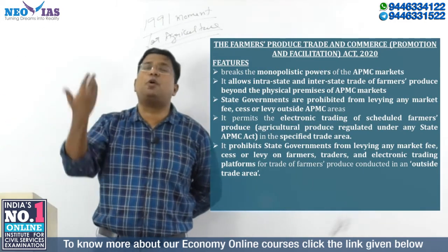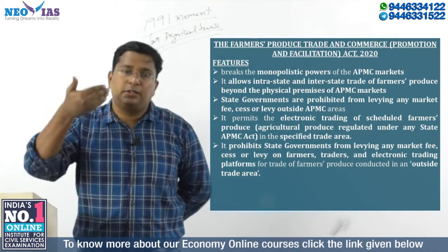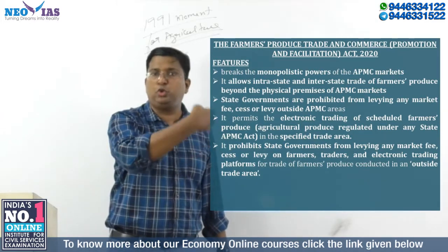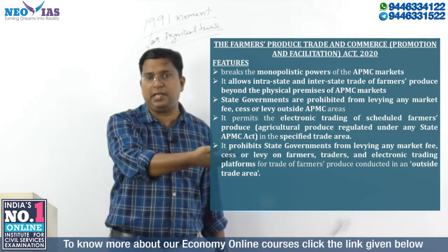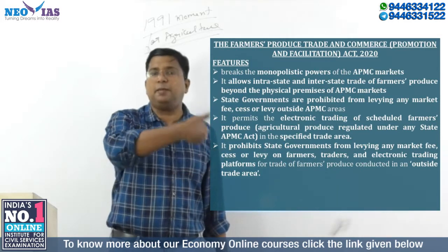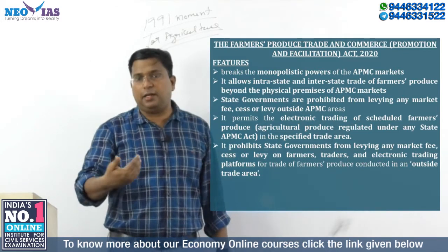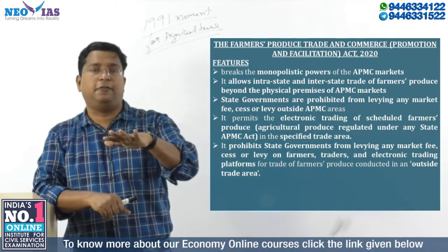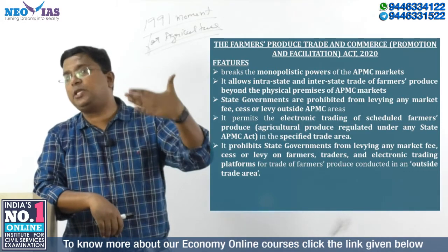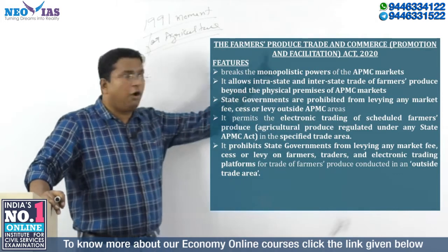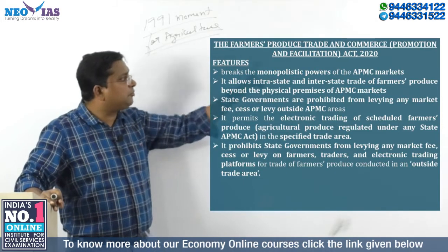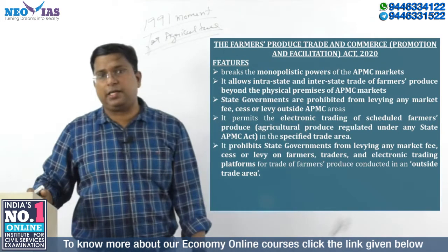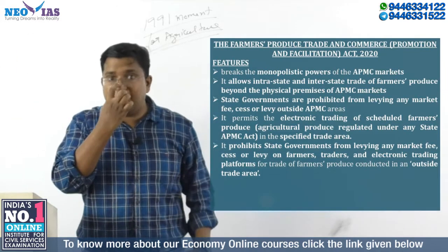Since farmers don't have any option, and since there is a trade cartel due to fewer traders in each APMC mandi, these traders form a cartel and the price is not benefiting the farmers. One of the major reasons for farmers having lower income is the current state APMC laws. The basic aim of the Farmers' Produce Trade and Commerce (Promotion and Facilitation) Act is to break this monopoly power of the APMC market.